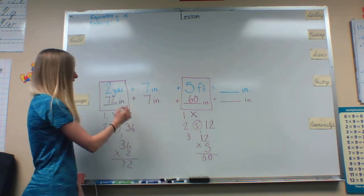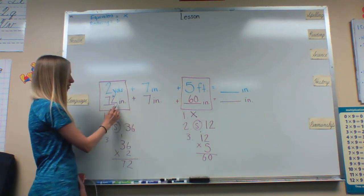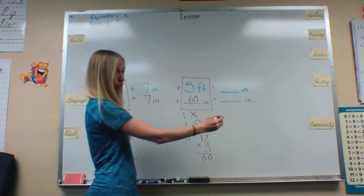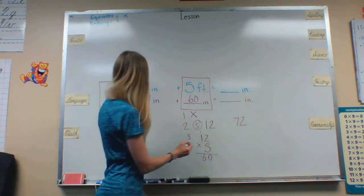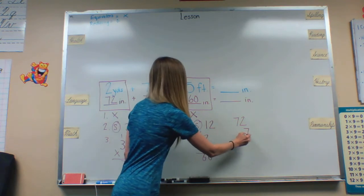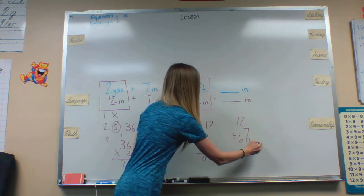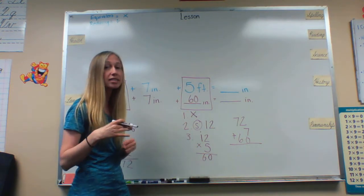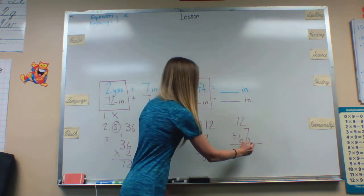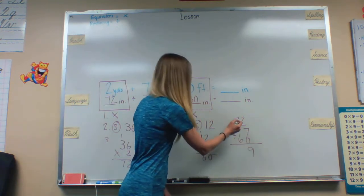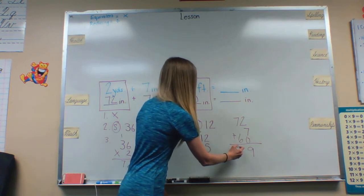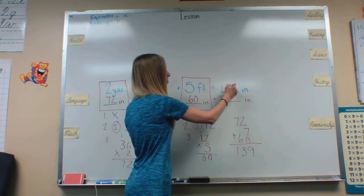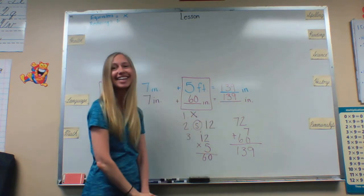Once we have done that we can now add everything up. So we will do 72 plus 7 plus 60. And the order doesn't matter because when you add the order of your addends does not matter. 2 plus 7 plus 0 is 9. 7 plus 6 is 13. And so our answer will be 139 inches.